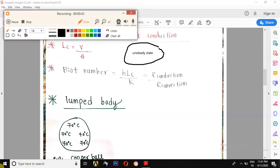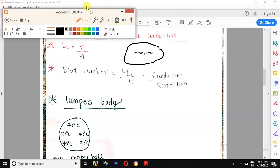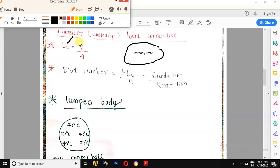The temperature of the body quickly changes if it is having low volume and high surface area. To solve unsteady state problems, we define a new parameter, characteristic length, which is given by volume by surface area.